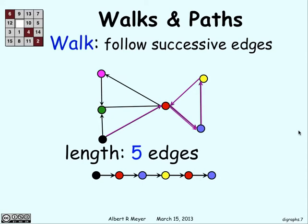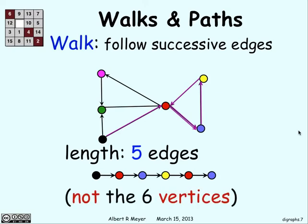the length would be five, because we went from red to black, black to blue, blue to yellow, yellow to red, red to blue. It's not the six vertices that we went through. And you have to be careful about that, because that difference of one can kind of get you.